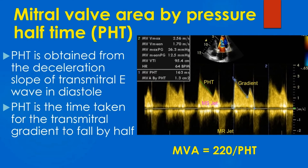In mitral stenosis there is no diastasis. The E wave merges with the A wave, resulting in EA fusion. The green cursor measures the PHT of the mitral stenosis jet. PHT is the time taken for the transmitral gradient to fall by half, or equivalently for the transmitral velocity to fall by a factor of root 2.